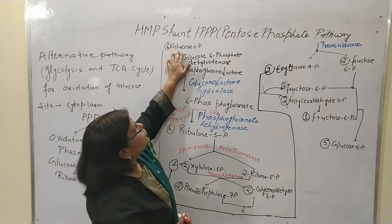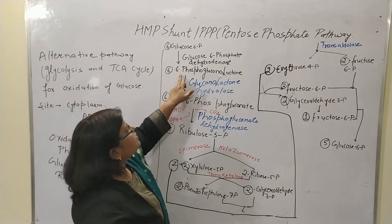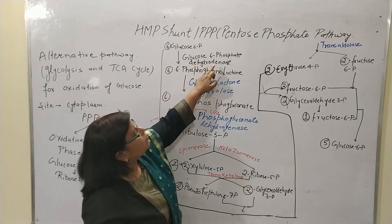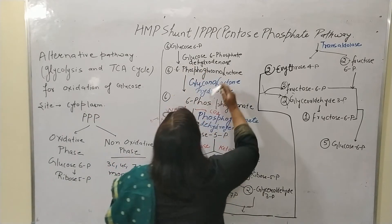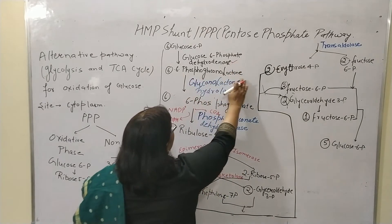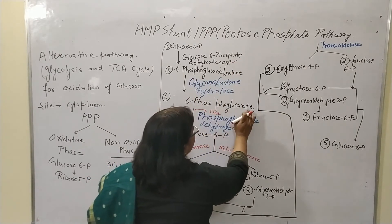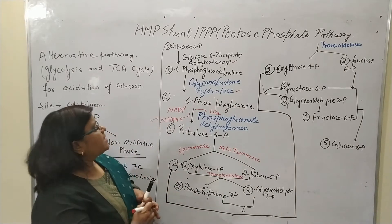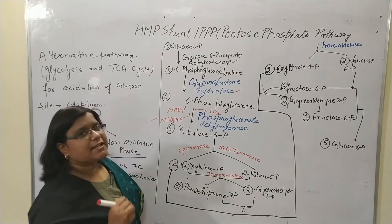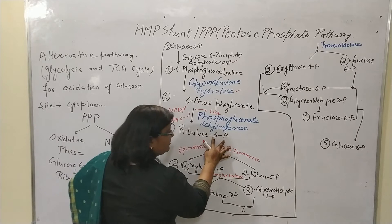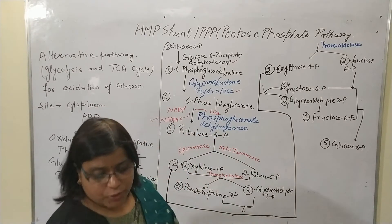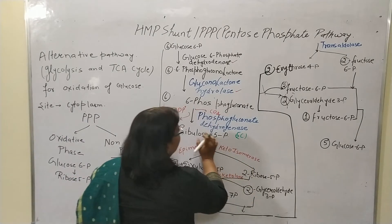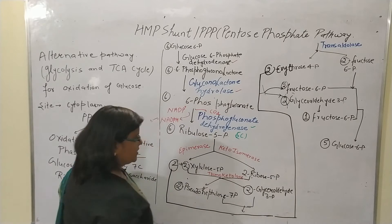In the pathway, 6 molecules of glucose 6-phosphate are converted into 6-phosphogluconolactone in the presence of glucose 6-phosphate dehydrogenase. The 6-phosphogluconolactone is then converted into 6-phosphogluconate in the presence of hydrolase. Next, 6 molecules of 6-phosphogluconate are converted into 6 molecules of ribulose 5-phosphate — a 5-carbon sugar — by the enzyme phosphogluconate dehydrogenase.